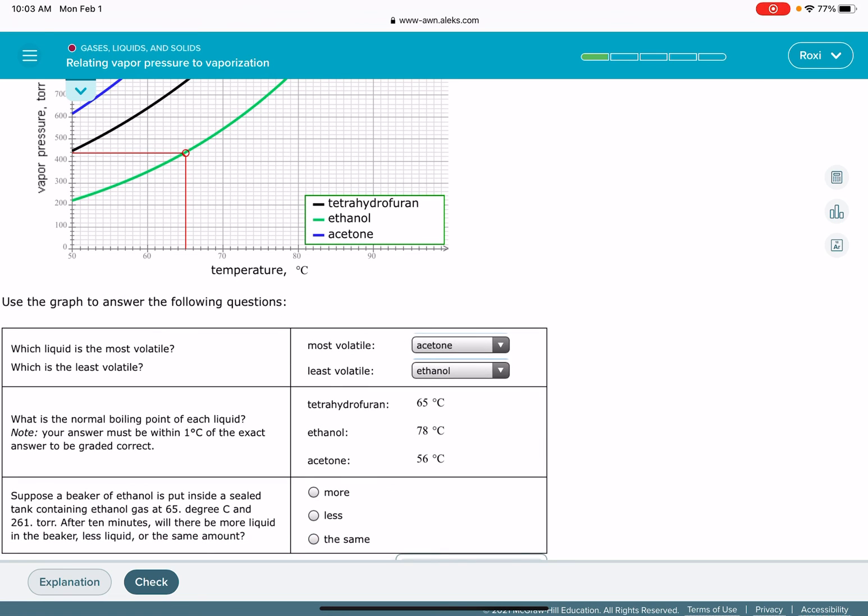As it evaporates some of these gases, those gases are going to come from the ethanol in the beaker. So this means that the question is asking, will there be more or less liquid in the beaker? There will be less liquid in the beaker because ethanol is going to take some of that liquid and evaporate it and turn it into a gas so that it can get up to that 440 torr vapor pressure.